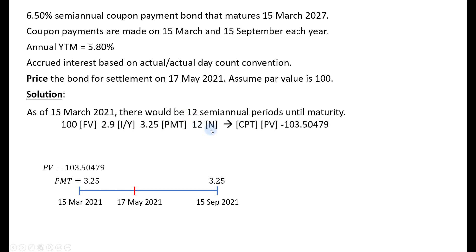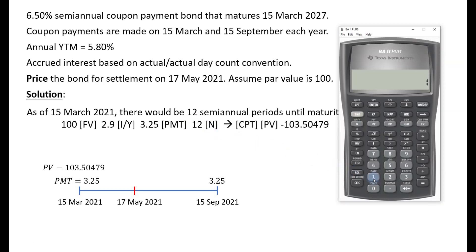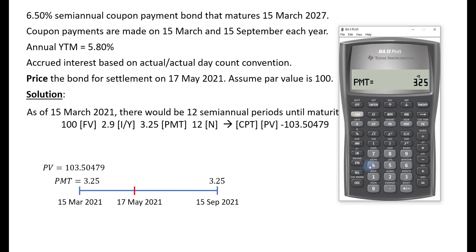Entering this into the financial calculator: FV = 100, I/Y = 5.8% / 2 = 2.9% (the semi-annual yield), PMT = 3.25, N = 12. Computing the present value gives us 103.50479. This is the value of the bond on 15 March 2021.